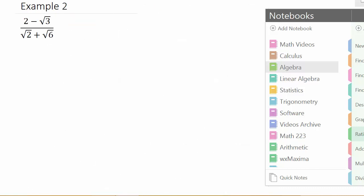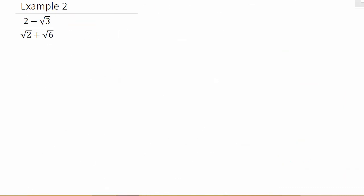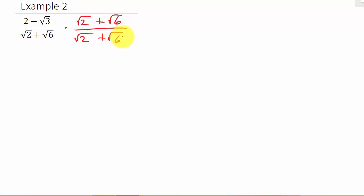Now let's look at the second problem: 2 minus square root of 3 over square root of 2 plus square root of 6. Nothing under the radical simplifies here, so we don't have to worry about that. We'll multiply by the conjugate of the denominator, which is square root of 2 minus square root of 6 — you change the sign in the middle.